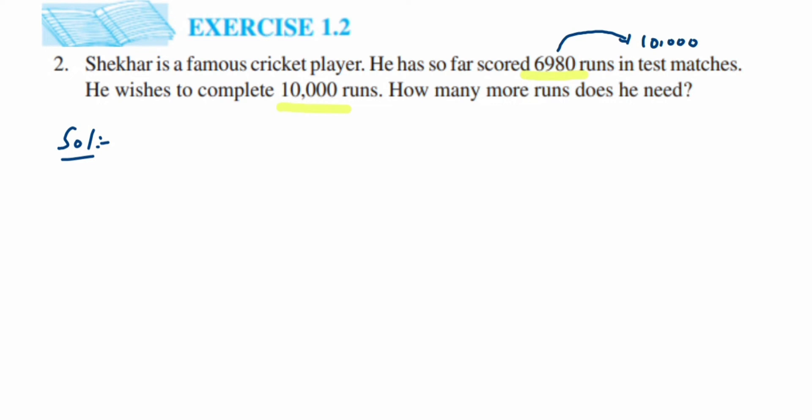We're going to write down the statements. First will be runs achieved. So runs achieved is 10,000—you want to achieve 10,000 runs. But how much run did he score? Runs scored equals 6,980. Now we have to find out the answer: how many more scores he needed. So runs required equals—we're going to subtract it.